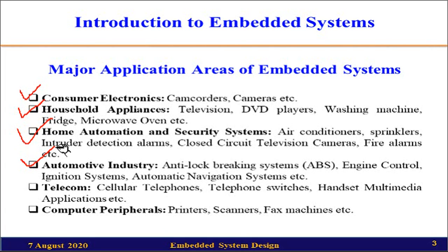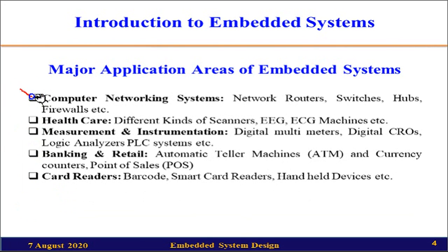In the automotive industry we have anti-lock braking systems (ABS), engine control systems, ignition systems, and automatic navigation systems. In the telecom sector: cellular telephones, telephone switches, handset multimedia appliances, and multimedia applications. In computer peripherals we can consider printers, scanners, and fax machines as embedded systems. In computer networking systems we can consider network routers, network switches, hubs, and firewalls. In the healthcare area we find different types of scanners, EEG machines, and ECG machines.